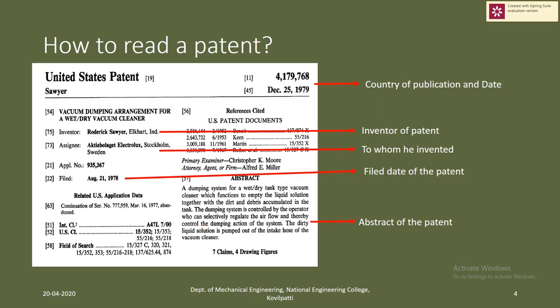Once you download the patents from the patent repository, you have to read the patents. Looking at the front page of a US patent, at the top portion you will see the country of publication and date of publication. You will also see the inventor and the assignee — the assignee being the company or employer who assigned the inventor to do the invention.